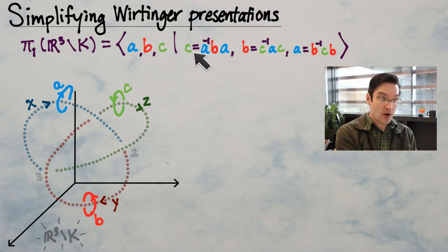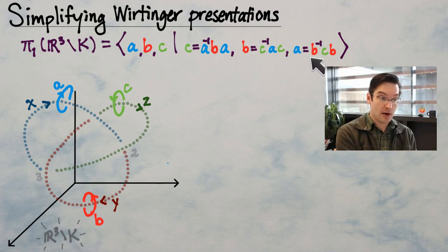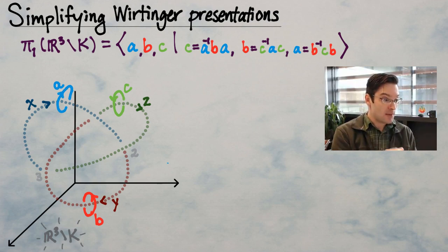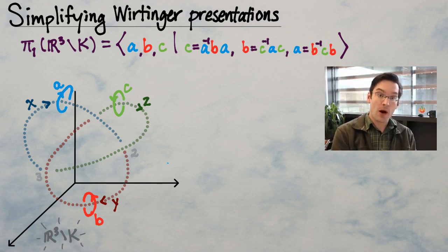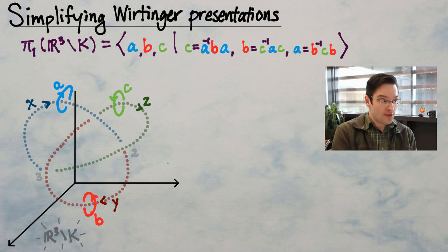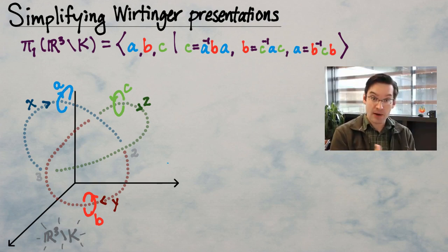To every crossing, we assign a conjugation relation that relates the three loops incident at that crossing. Those relations mirror, as closely as possible within a group, the fundamental quandle structure that relates the arcs incident at that crossing. This gives us a presentation — something to work with to define this knot group.